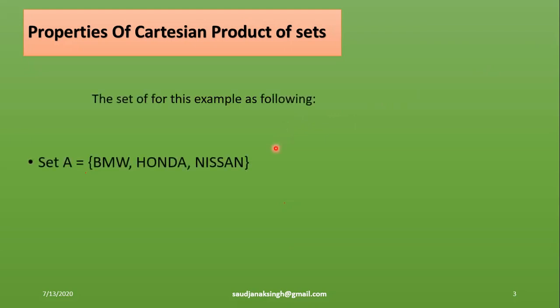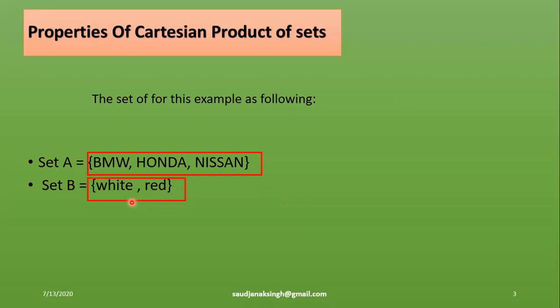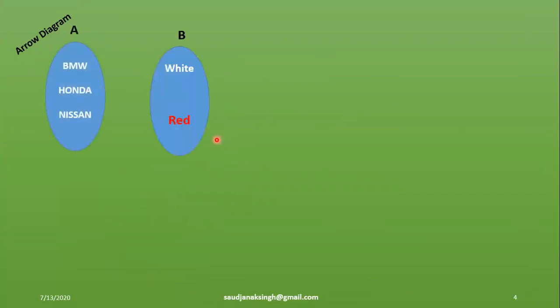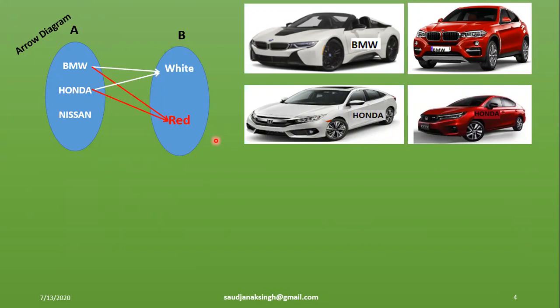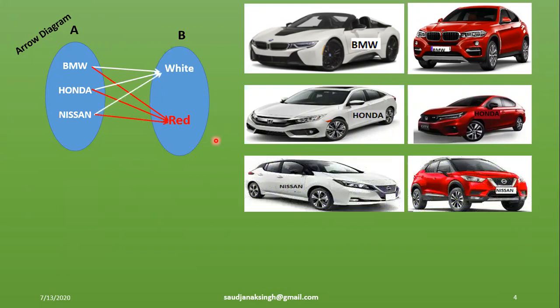Set A contains the names of the companies, and set B contains the colors, which are red and white. He can choose all possible ways in which every car company is paired with all colors, as shown by an arrow diagram. Set A is represented on the left and set B on the right. Two arrows are drawn from BMW, Honda, and Nissan to the elements in set B. We use arrows to map every element in set A to every element in set B.